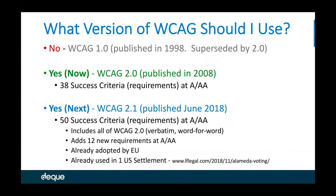If you're in the United States or many other countries, WCAG 2.0 is an obvious now — you should already be compliant. Europe is ahead of the game and is already pointing in legislation to WCAG 2.1 for compliance as early as 2019. If you're in Europe, already include those 12 new requirements. And if you're smart, include them as soon as you can even if you're in the US, Canada, Asia, or Australia, because those 12 new requirements remove additional barriers.